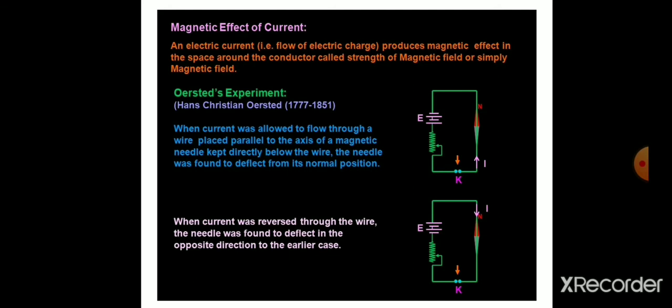This is known as the magnetic effect of current. That is, when an electric current produces magnetic effect in the space around the conductor, then this effect of magnetic field is known as magnetic effect of current.